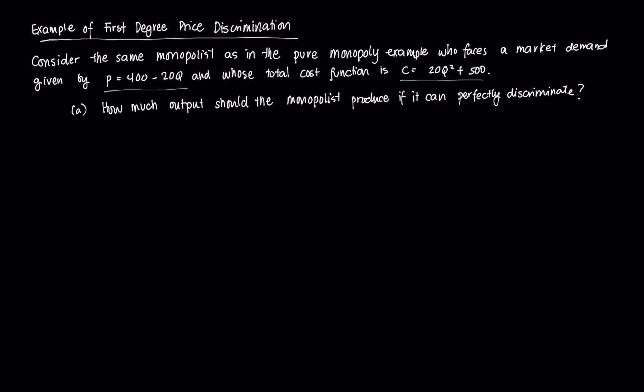So we ask first the question: how much total output should the monopolist produce if it can perfectly discriminate?